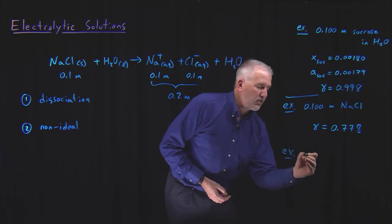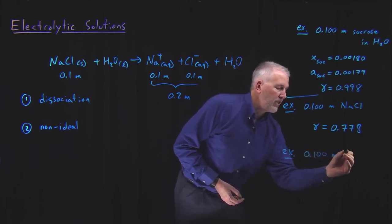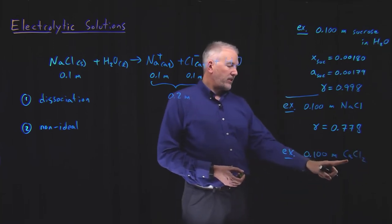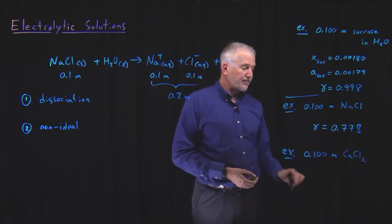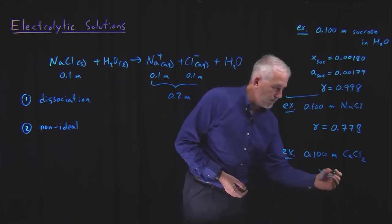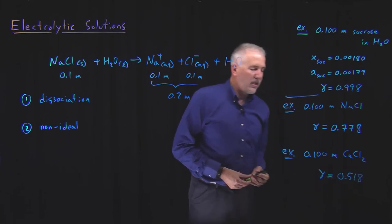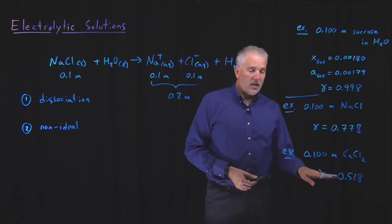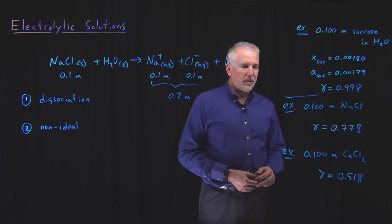Even worse, if I go to a solution that's 0.1 molal in calcium chloride, as we'll see shortly, the fact that this is a plus two ion rather than a plus one ion makes it much less ideal. The activity coefficient for this solution, or at least for the calcium chloride in the solution, is down to 0.518. So the activity is barely half what we would expect it to be if we consider the solution to be ideal.